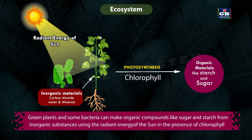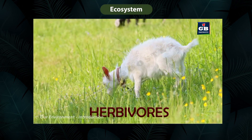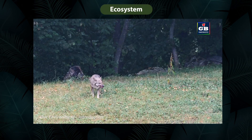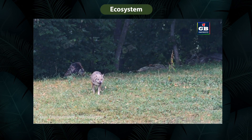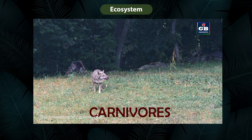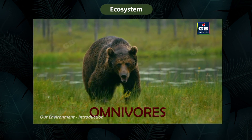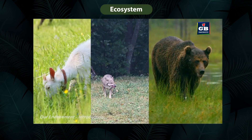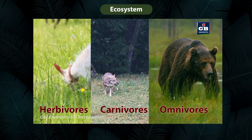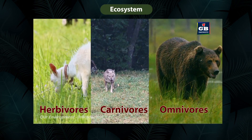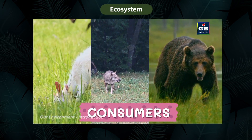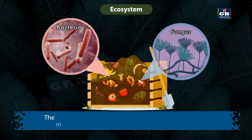Green plants and some bacteria can make organic compounds like sugar and starch from inorganic substances using the radiant energy of the sun in the presence of chlorophyll — these organisms are called producers. The animals that feed on plants are called herbivores, those that feed on herbivores are called carnivores, and those that feed on both plants and animals are called omnivores.